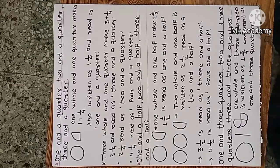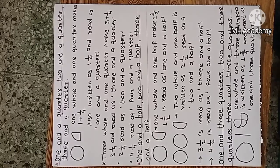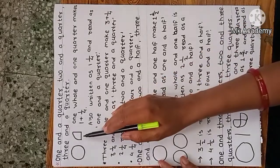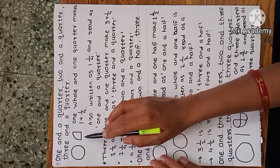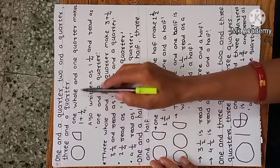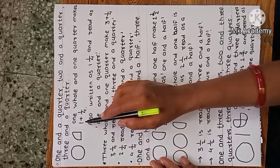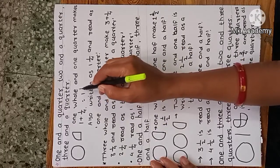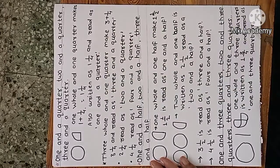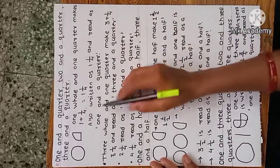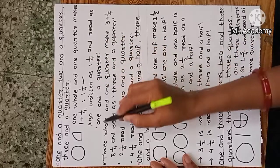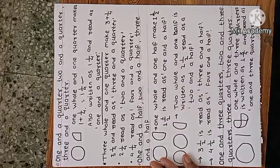Now, one and a quarter means one whole and one quarter. One whole and one quarter makes one plus one-by-four, and it can be written as one and one-by-four, read as one and a quarter.